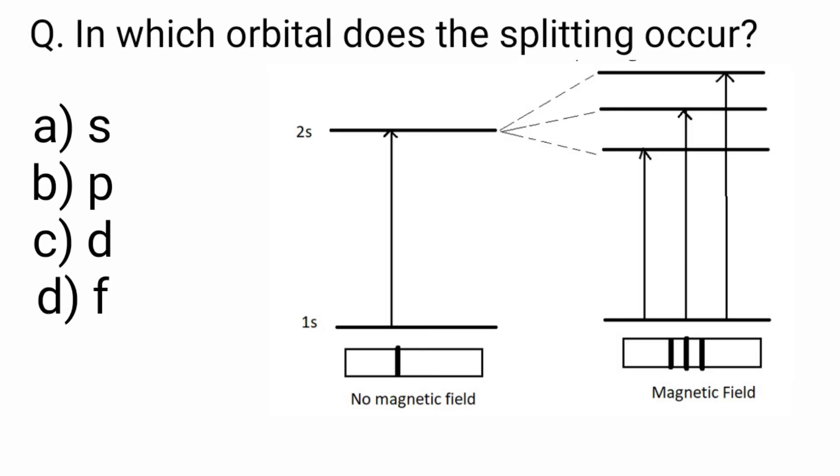Next is, in which orbital does splitting occur? As we can see, three spectral lines are observed in the presence of magnetic field. Hence, splitting must occur in p orbital. We can also calculate from this: 2L plus 1 equals 3. Here the value of L is 1. So L equals 1 is for p orbital. So in this, we have the right option, option b.